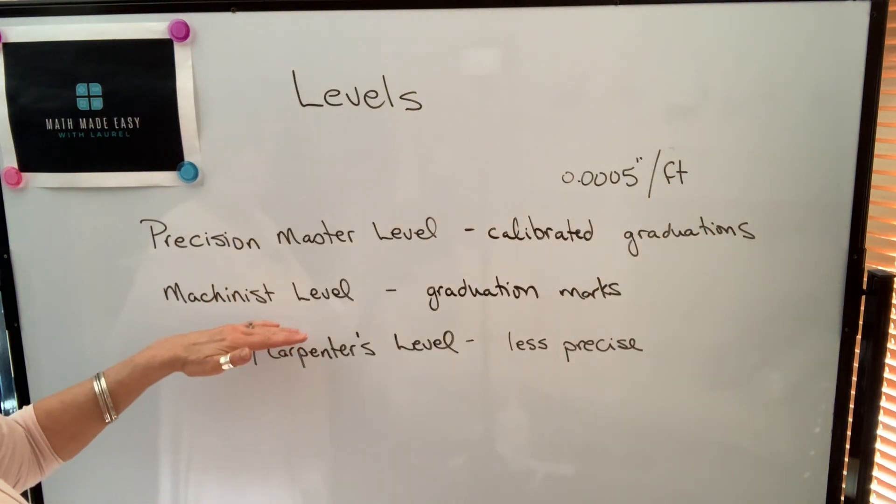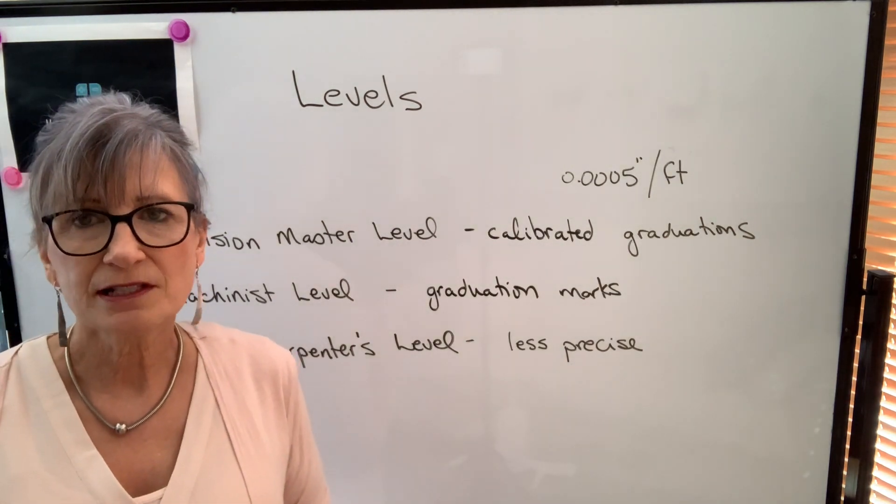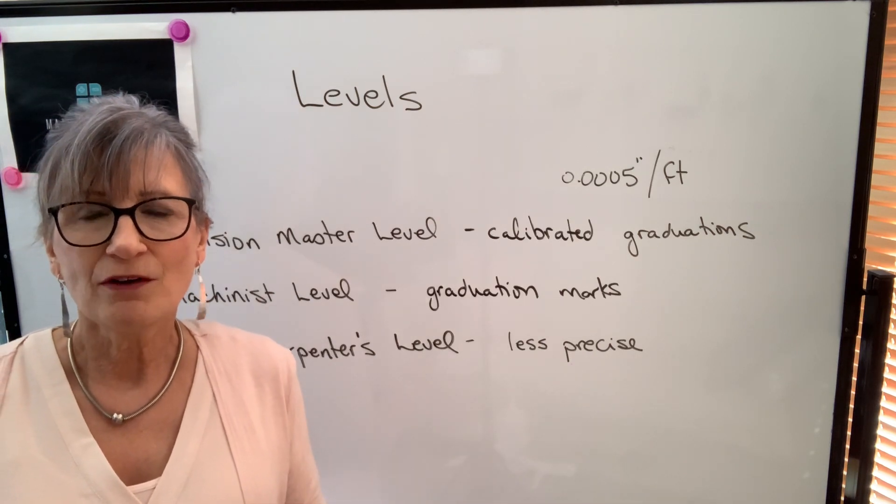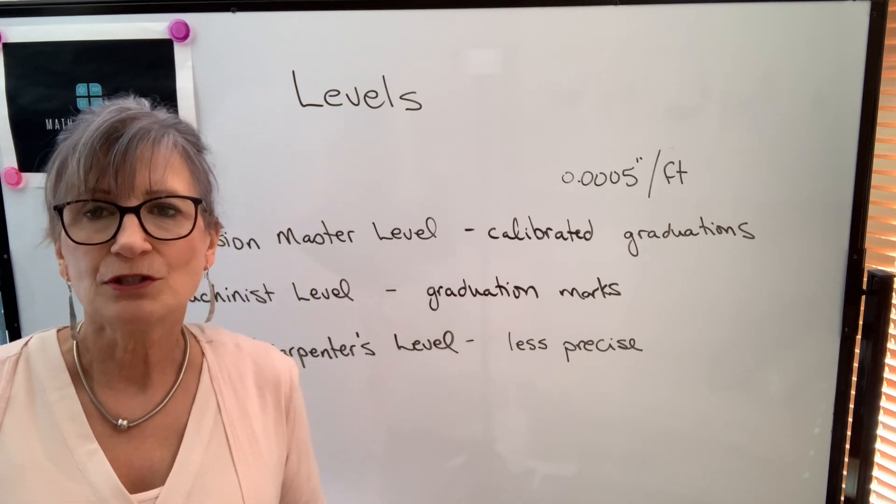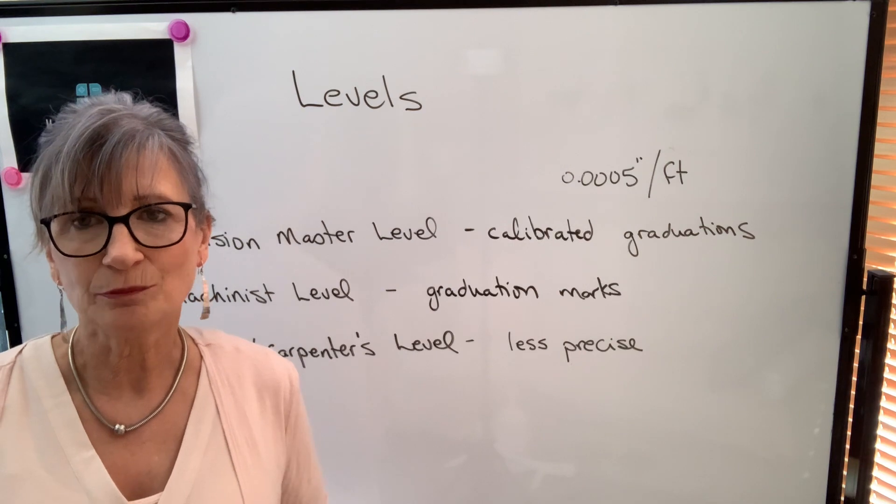The next type of level that you might work with is a machinist level, and a machinist level also has graduation marks on the vial. However, it will not say what those graduation marks represent. It'll be up to you to determine the values, and there's a range of values that they could be.